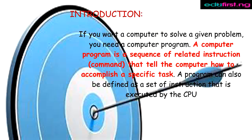By the way of introduction, if you want a computer to solve a given problem, you need a computer program. A computer program is a sequence of related instructions that tell the computer how to accomplish a specific task. We can also say a program is a set of instructions that is executed by the CPU.